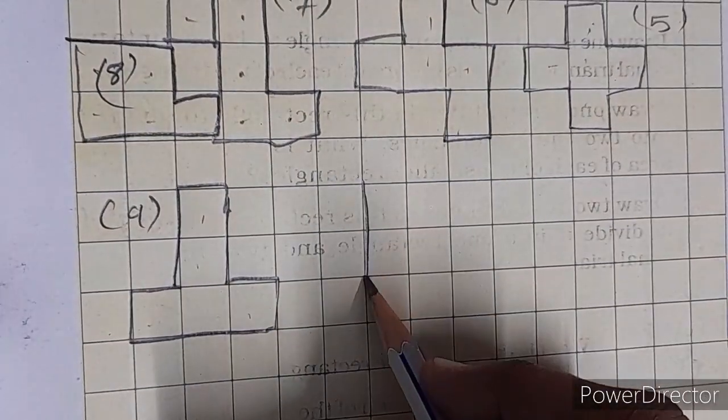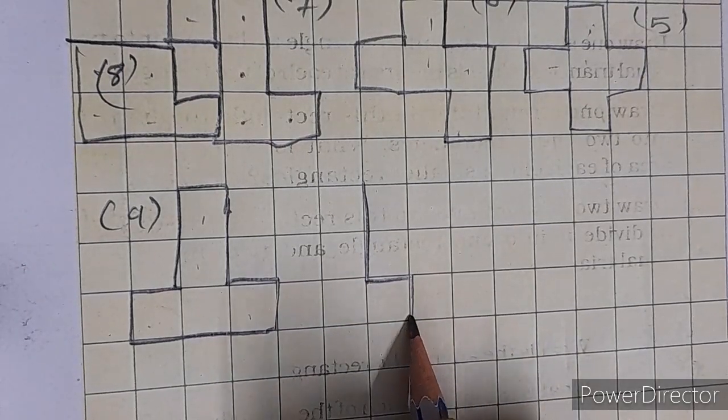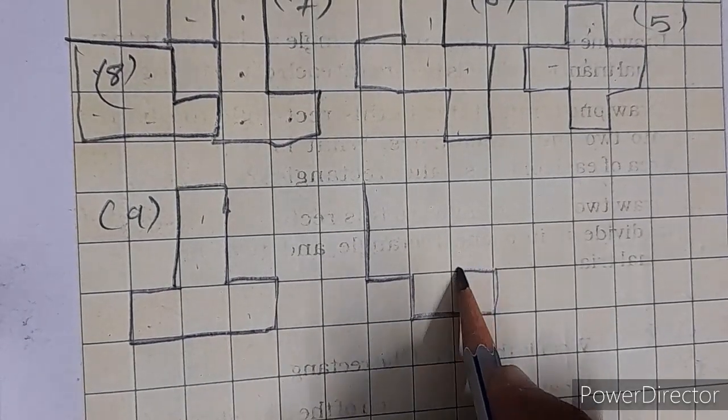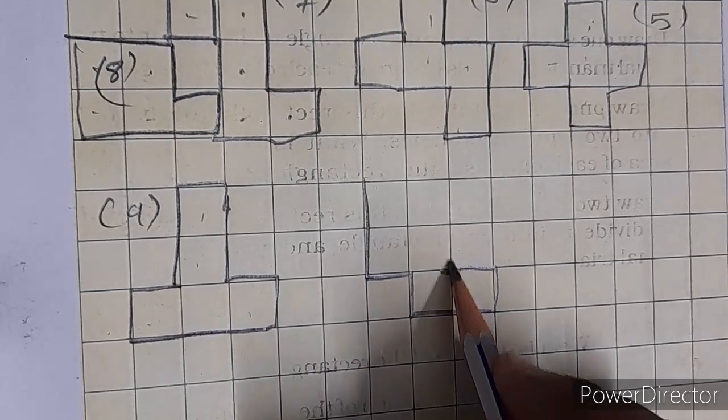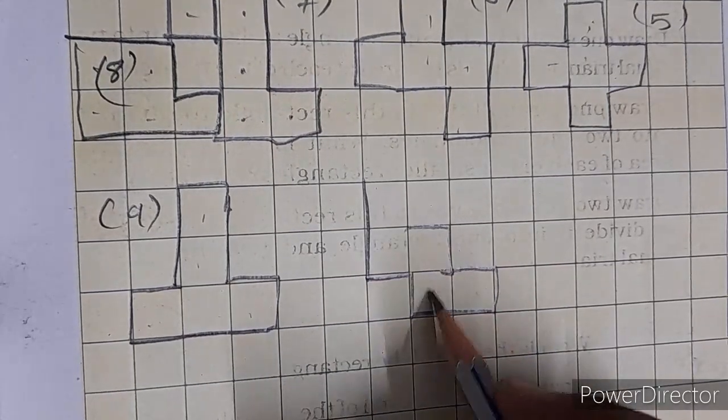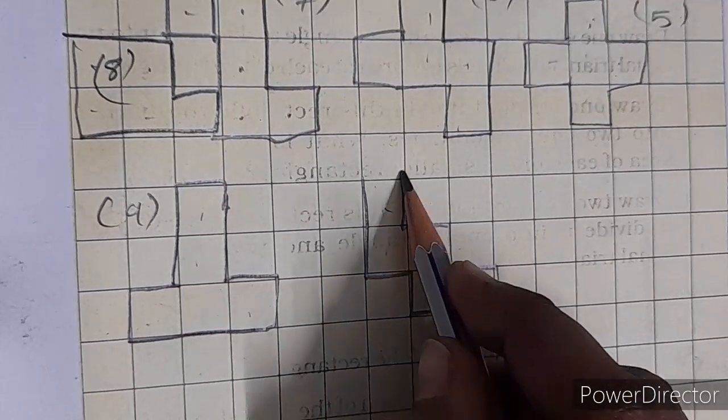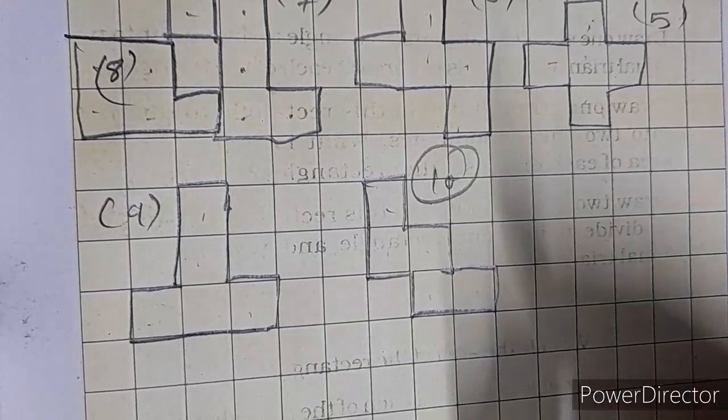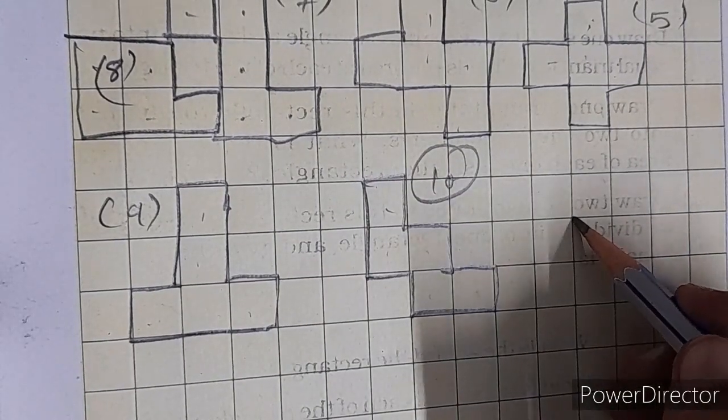Next we will use the same. So we will draw 2, 3, 4, 5. We will draw 1, 2, 3, 4, 5. This will be 10 number. Next 11 number we will draw.